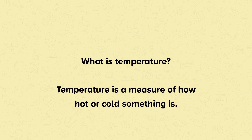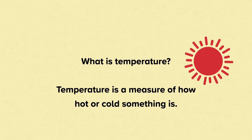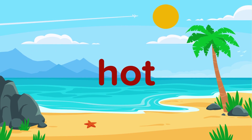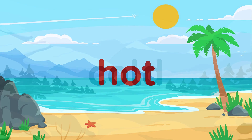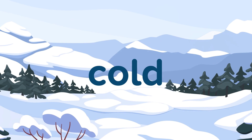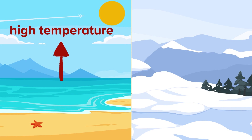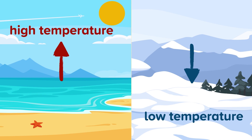Temperature is a measure of how hot or cold something is. The weather can sometimes be hot and sometimes it can be cold. A hot place will have a high temperature and a cold place will have a low temperature.